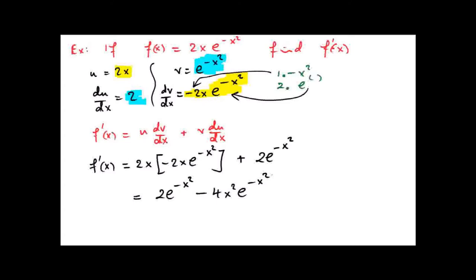I put the 2e to the power of minus x squared first because it's positive. Now, what do you notice looking at that? You've got a 2 common and you've got an e to the power of minus x squared common. So that's 2e to the power of minus x squared multiplied by 1 minus 2x squared.